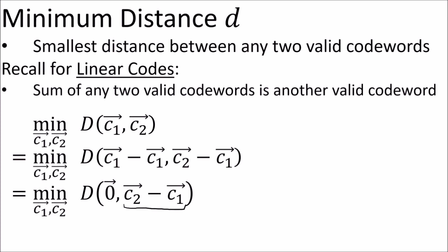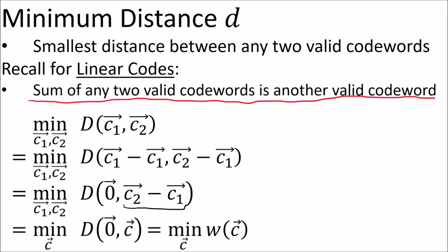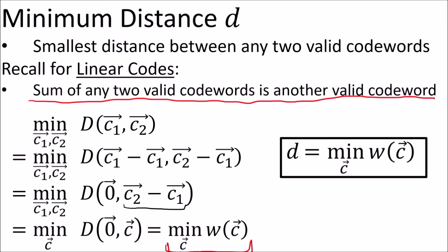Recall that for linear codes the addition or subtraction of valid code words is just another valid code word. So this is just equal to the minimum distance from zero to any valid non-zero code word. Therefore the minimum distance is equal to the smallest non-zero Hamming weight over all valid code words in the code.